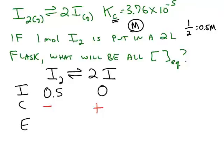The reactant side can only decrease if the product side is increasing. The amount that they change is based on the coefficients. The coefficient on the left-hand side is a 1, so we know we're going to lose x from the left, but on the right we're going to gain 2x.